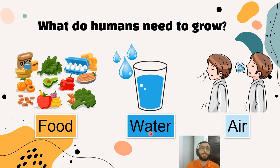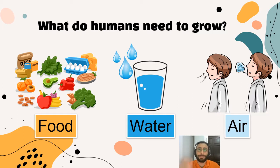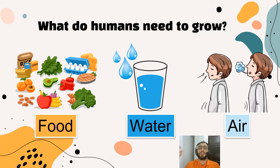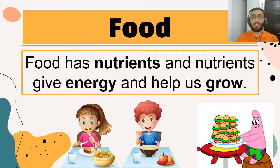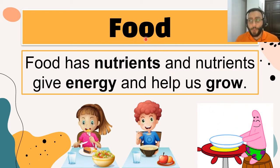Water helps our body cool down, gives us energy, and keeps us from feeling thirsty — it keeps us hydrated. Another thing we need is air, and especially oxygen in the air. When we breathe and live using air, we grow. Now let's get into the details, starting with food.